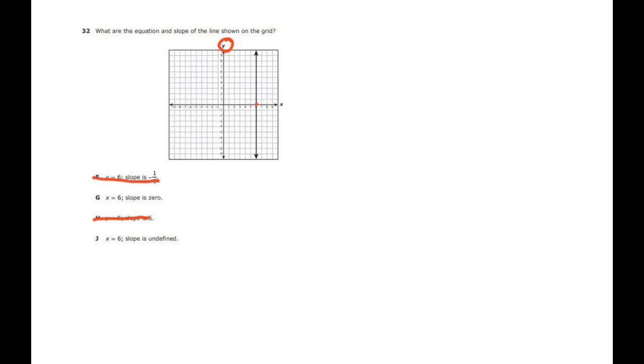And the slope, if you have a slope of negative 1/6 or 6, this one would be a steep incline and this would be a slow decline. So we got to determine if the answer is G or J.